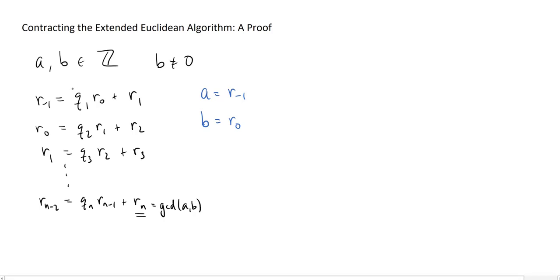Next, the previous video told you to take all of the quotients, and you're going to write them down in reverse order, starting from the bottom, with a negation in front. So we keep doing that. We get negative Q2, negative Q1.